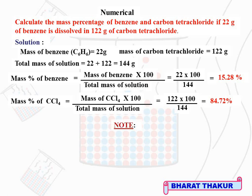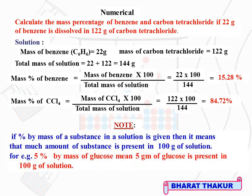Note: this subtraction shortcut works only when the solution contains exactly two components. Also note, if the percentage by mass of a substance is given — for example, 5% by mass of glucose — it means the weight of glucose is 5 grams and the total weight of the solution is 100 grams. This interpretation is important because in other numericals, percentage by mass is given and we need to extract the mass of solute and total mass of solution from it.